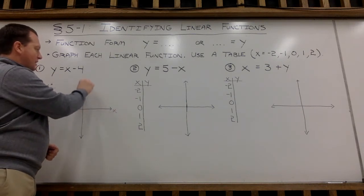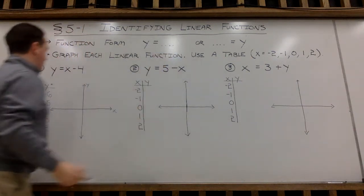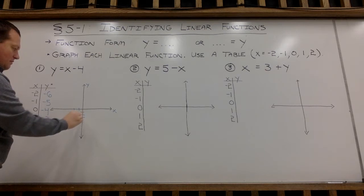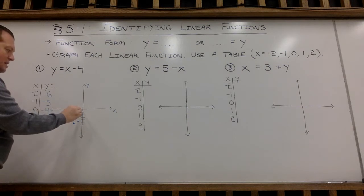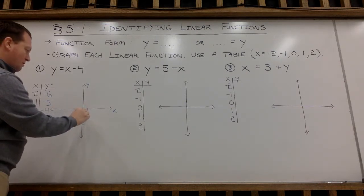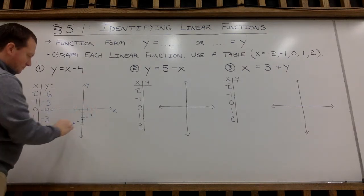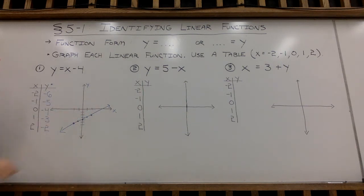So now I am going to graph these five ordered pairs. And I've got my x-axis, y-axis. And when I graph these, they should form a straight line, since we are working with linear functions today. So negative 2, negative 6 is going to be 2 to the left, down 1, 2, 3, 4, 5, 6. So I'll start there. Negative 1, negative 5, 1 to the left, down 5. 0, negative 4 is nowhere left to right, then down 1, 2, 3, 4. 1, negative 3, 1 to the right, down 3. And then 2, negative 2 is 2 to the right, down 2.